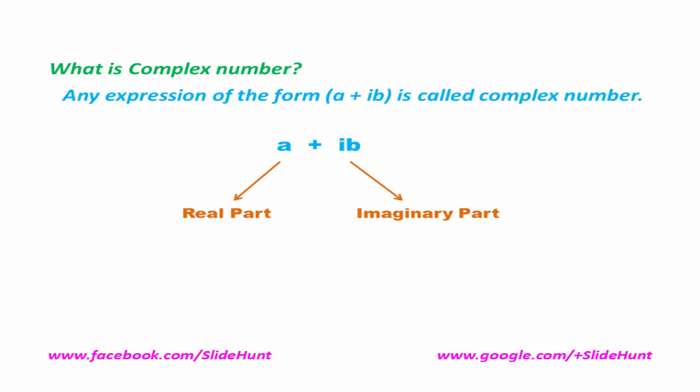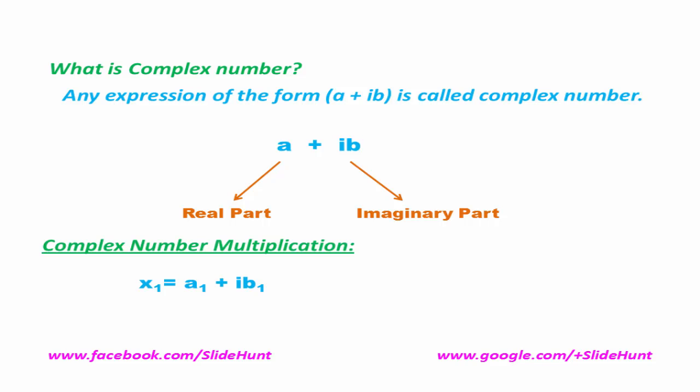Next we learn how to multiply two complex numbers. Let's say X1 is a complex number where A1 is the real part and B1 is the imaginary part. And X2 is another complex number where A2 is the real part and B2 is the imaginary part.